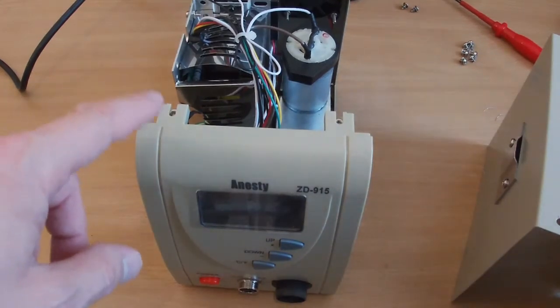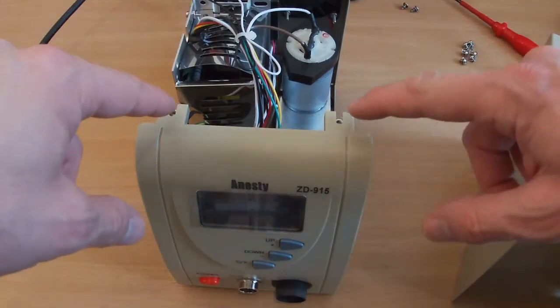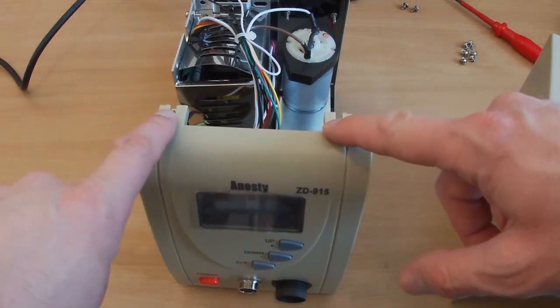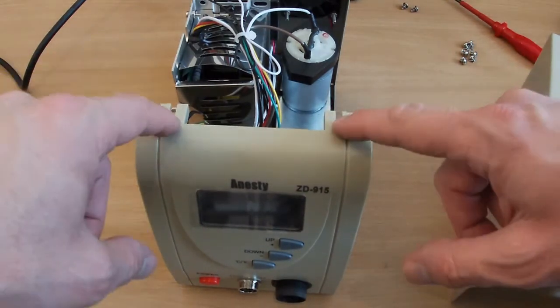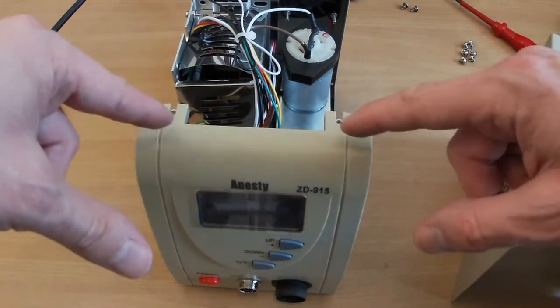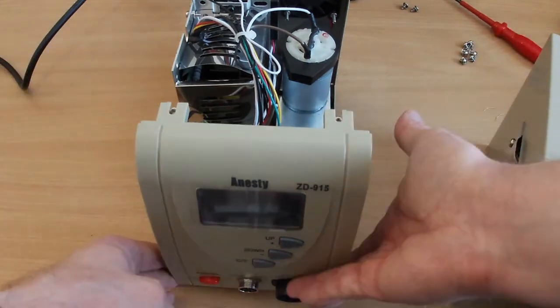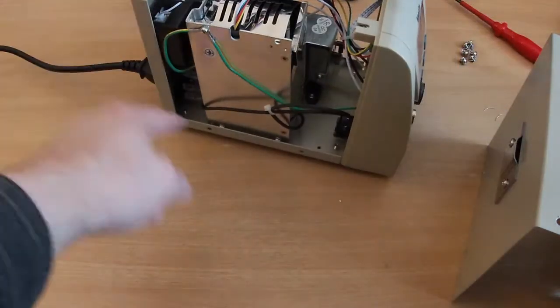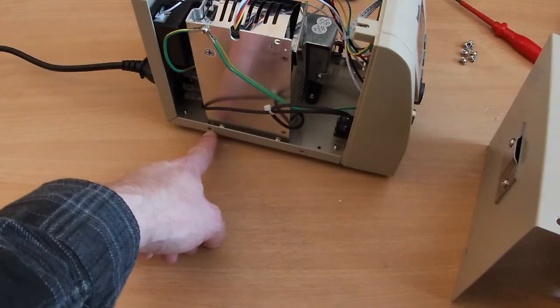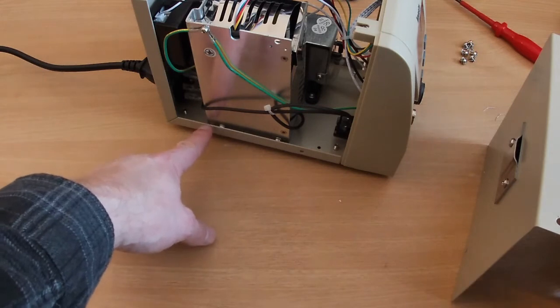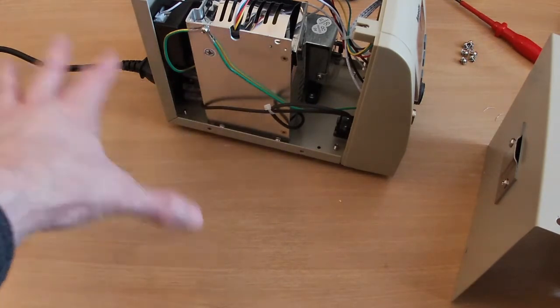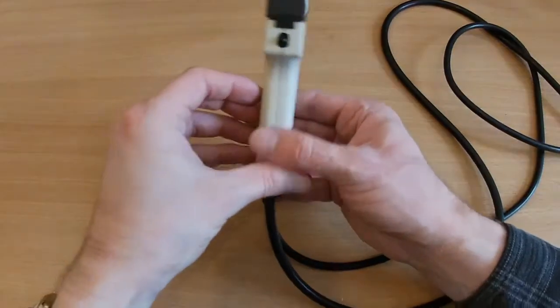So just before I put it back together it's worth noting that the two screws here that go into the top of the case are slightly longer than the rest. So if you've got one of these and you take it apart just make sure you put those back in the correct place. If you don't, I mean the only place it would cause a problem I think is here with this one where you could be going into the side of the power supply. So you might do some damage with the longer screw there, so just be aware of it.